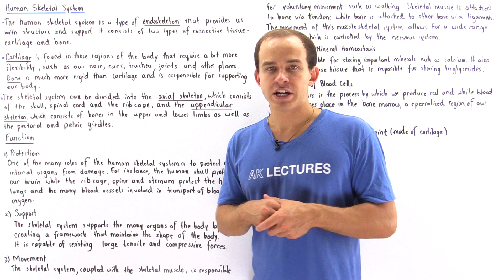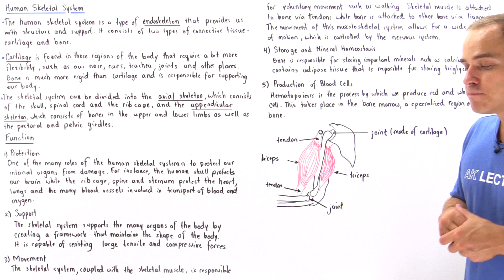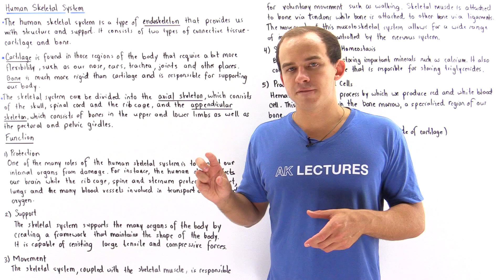Now bone, on the other hand, is a much more rigid connective tissue, and it is capable of resisting tensile and compressive forces. That's exactly why bone gives us our structure and provides us with support and gives us our shape. It serves many other purposes as we'll see in just a moment. The skeletal system of the human body is broken down into two divisions.